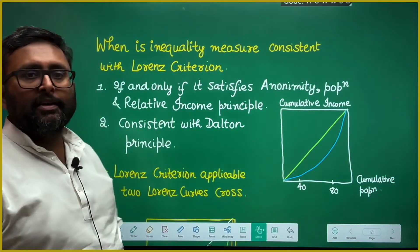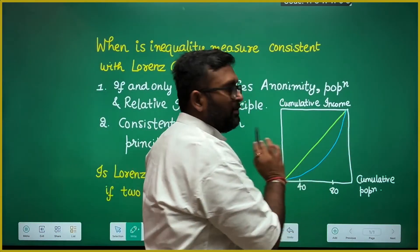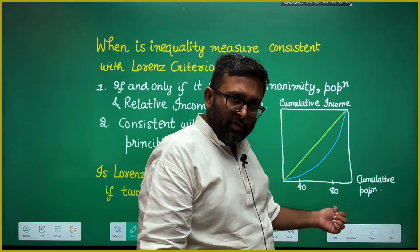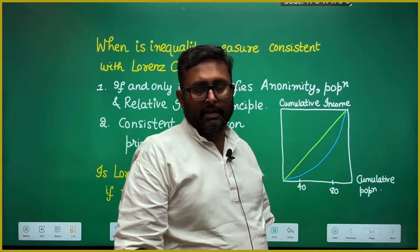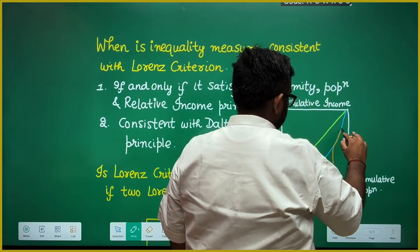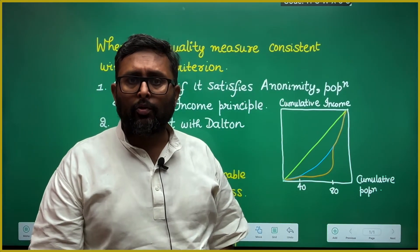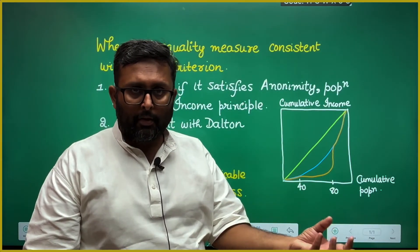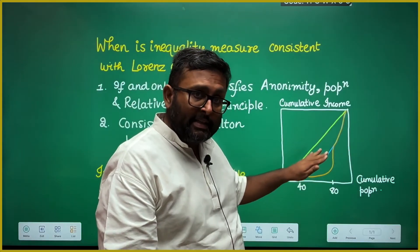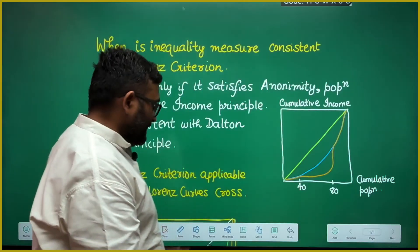Is the Lorenz curve consistent with the Dalton principle? Come back to the graph. You have the initial Lorenz curve. Now, suppose from the poorer section of the population — say the 40th percentile — income is transferred to the richer section, say the 80th percentile. This is a regressive transfer, and the Lorenz curve will shift to show more inequality. The Dalton principle says that if you take income from a poorer individual and transfer it to a richer individual, inequality should increase. That is exactly what happens here — the proportion of population is earning lesser income — so the Lorenz curve satisfies the Dalton principle.